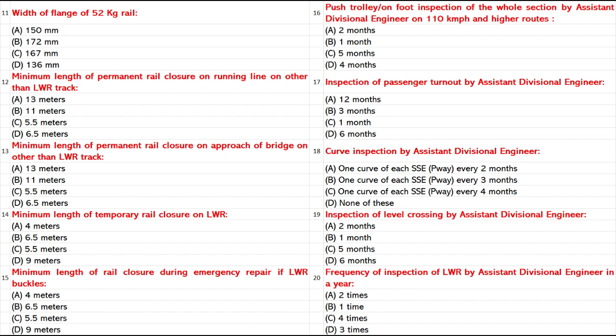Minimum Length of Rail Closure during Emergency Repair if LWR buckles: A. 4 mm. B. 6.5 mm. C. 5.5 mm. D. 9 mm. Answer: B. 6.5 mm.